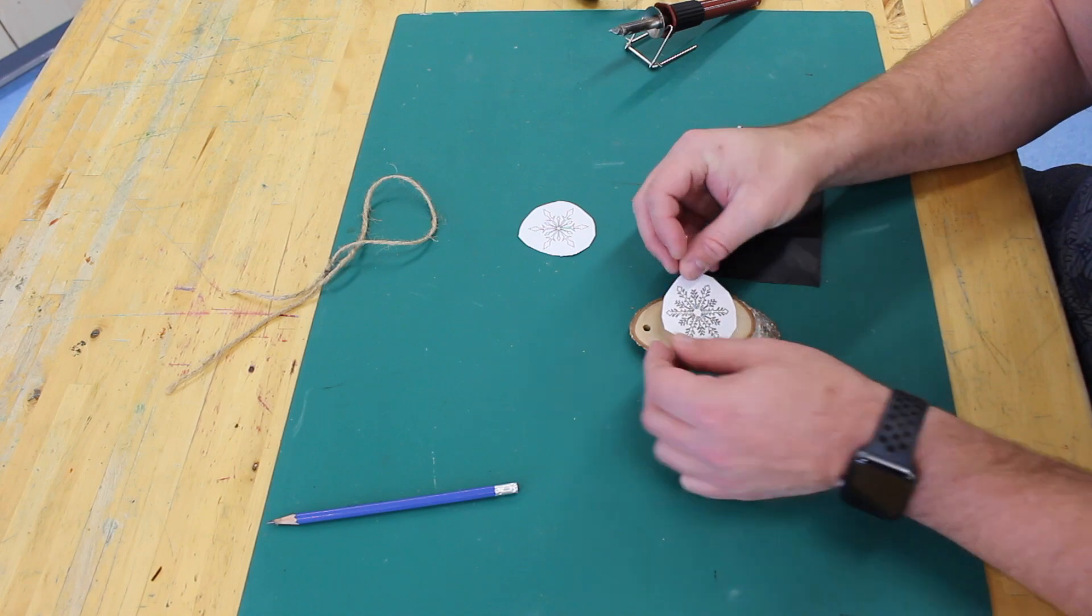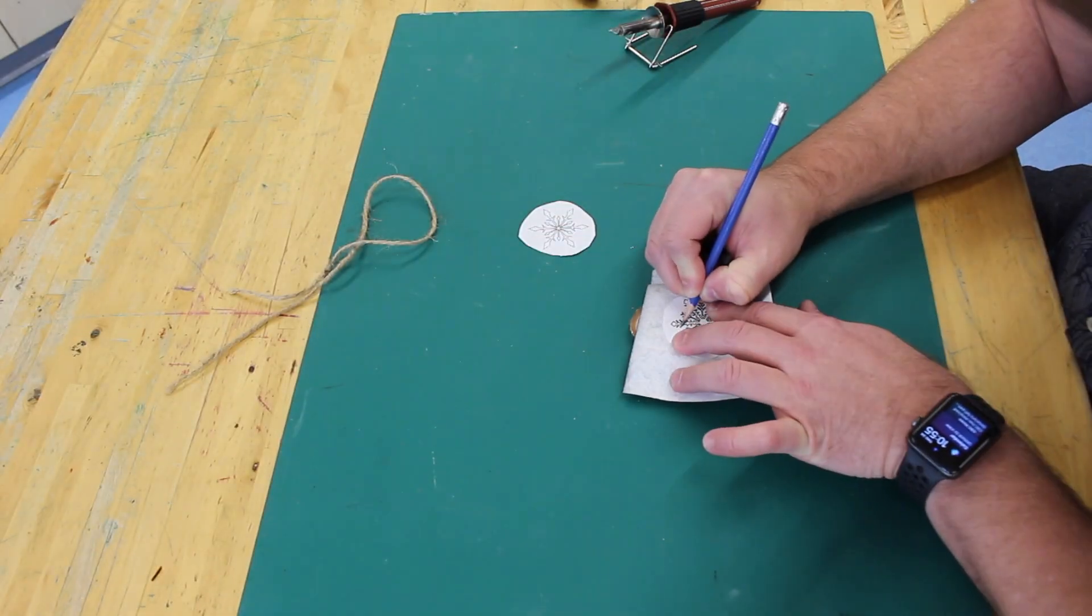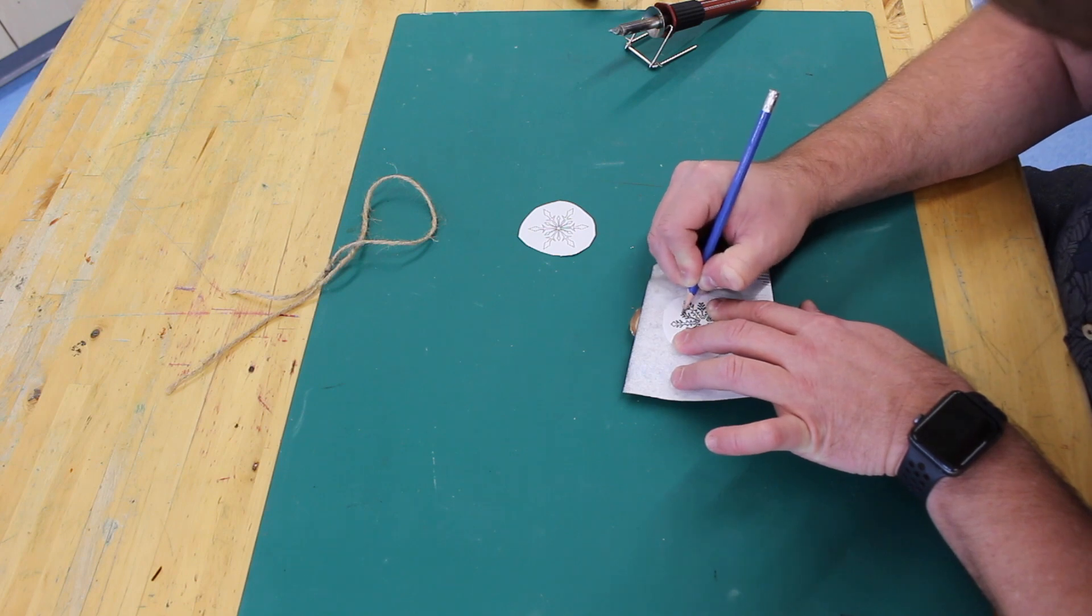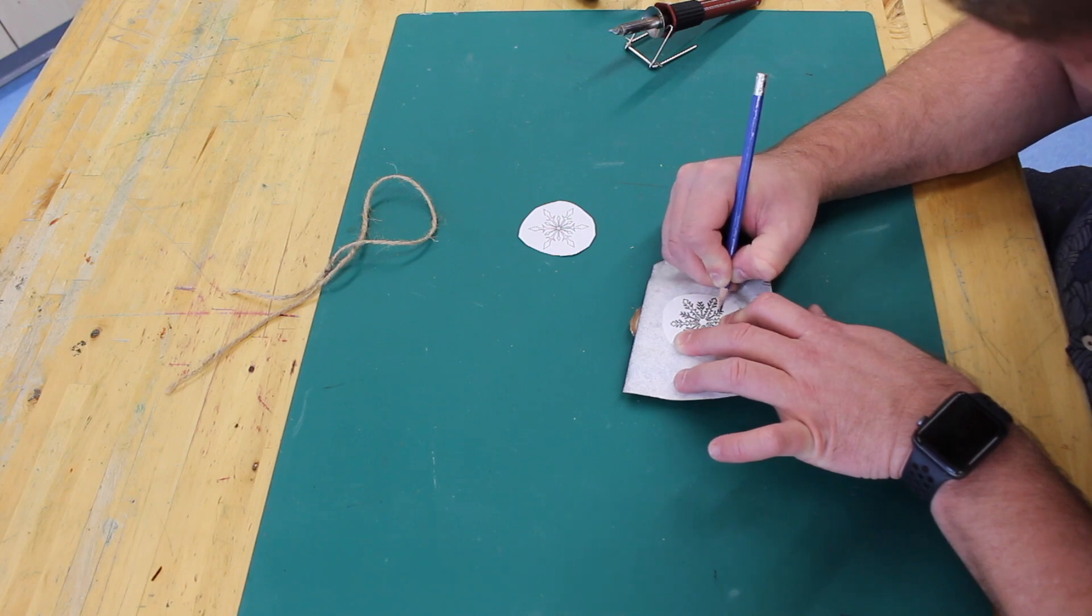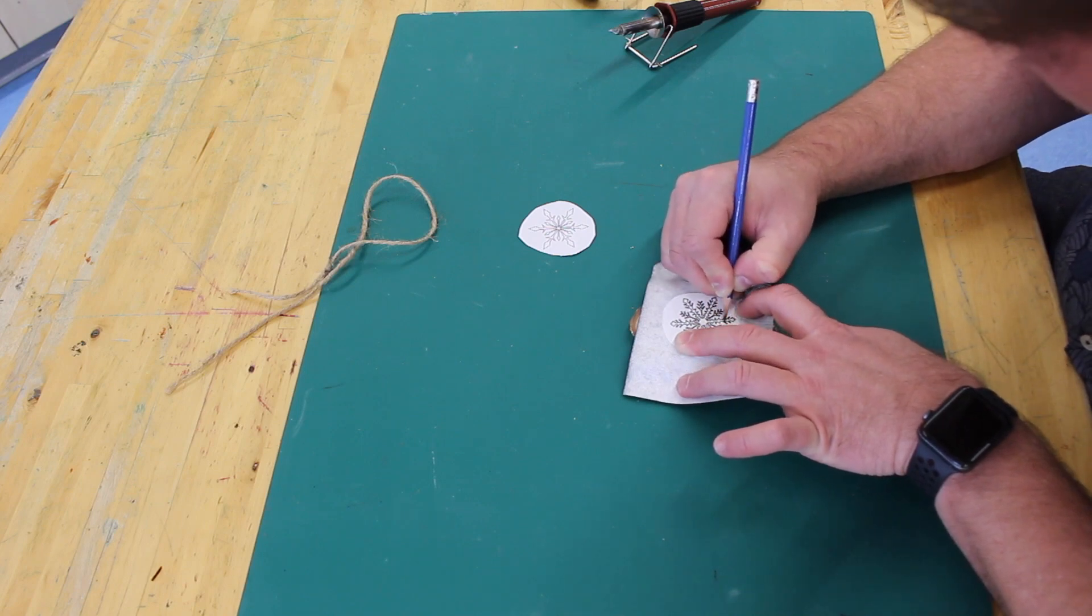We're going to be using twine for this one to hang the ornament, and you can see here I've got some black carbon paper and I've cut out some small snowflakes that I've printed off. The snowflakes have been sized so that they fit on the birch discs.